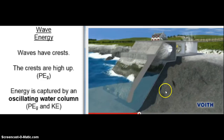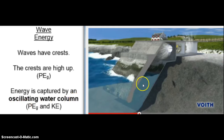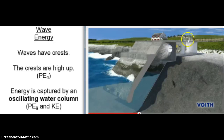So what's the fancy name for this device, which has a water column that oscillates up and down, generating airflow through a turbine? It's called an oscillating water column, and that's how we capture wave energy. Inside the column, we have two types of energy being used to produce electrical energy: the gravitational potential energy of the water column going up and down, and the kinetic energy of the passing air. So this uses both gravitational potential energy and kinetic energy to generate electricity.